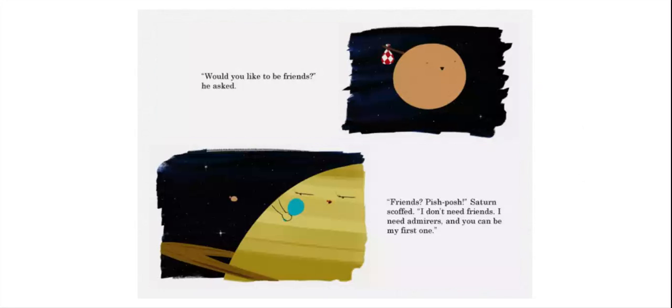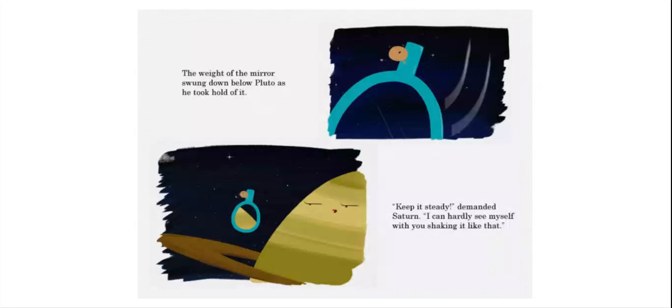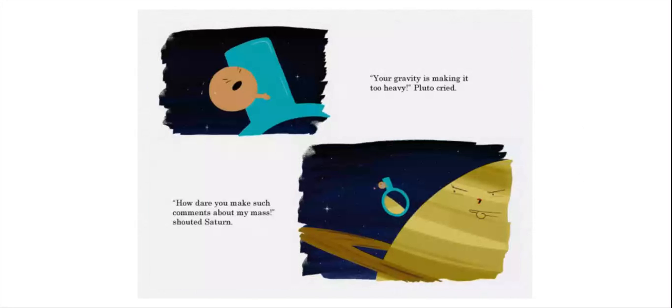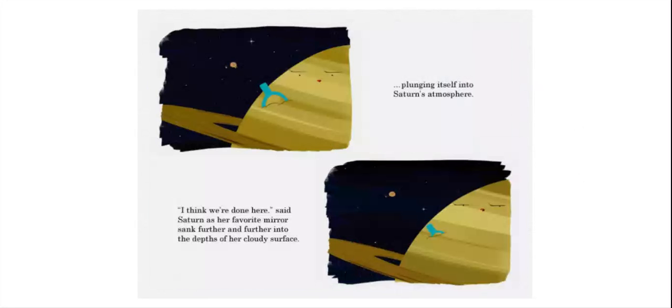Would you like to be friends? He asked. Friends? Pish posh. Saturn scoffed. I don't need friends. I need admirers. And you could be my first one. Hold my mirror for me, so I can get a view of the beauty that is my atmospheric body. The weight of the mirror swung down below Pluto as he took hold of it. Keep it steady, demanded Saturn. I can hardly see myself with you shaking it like that. Your gravity is making it too heavy, Pluto cried. How dare you make such comments about my mass, shouted Saturn.